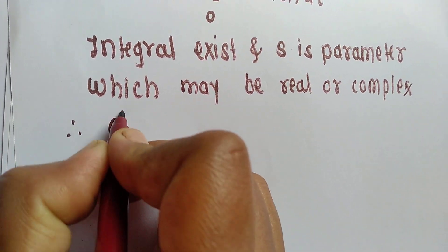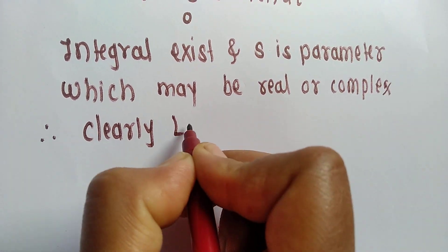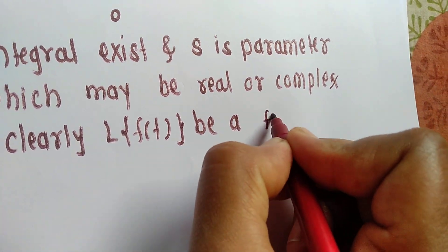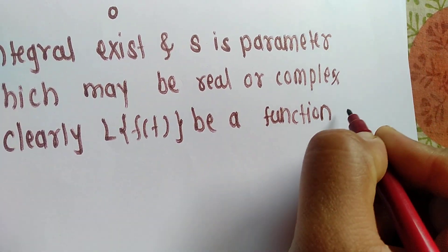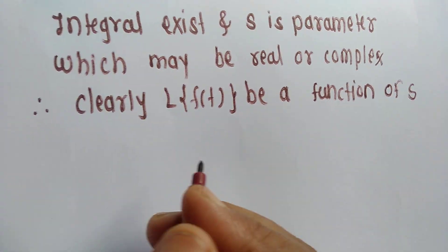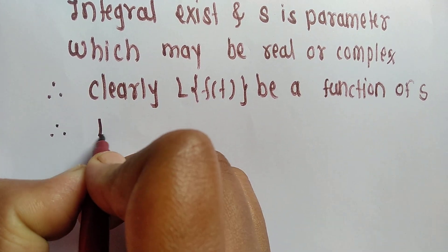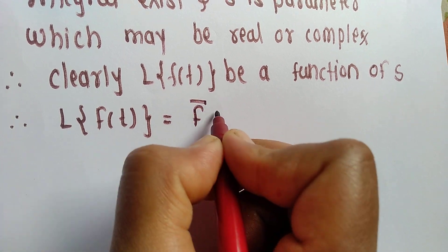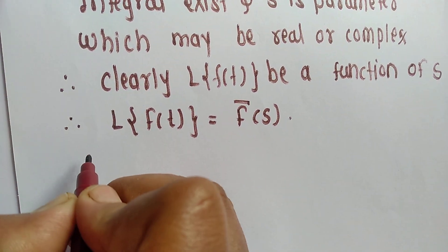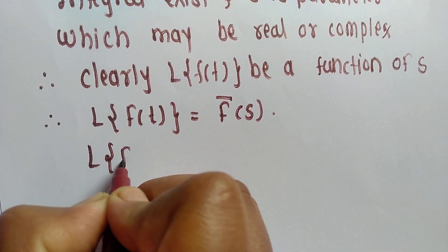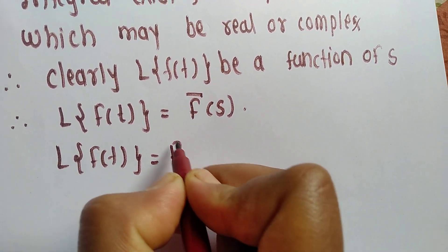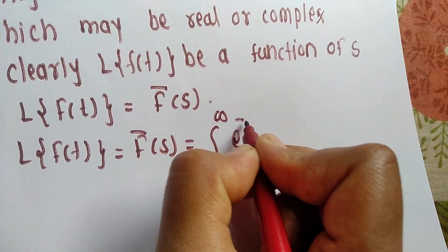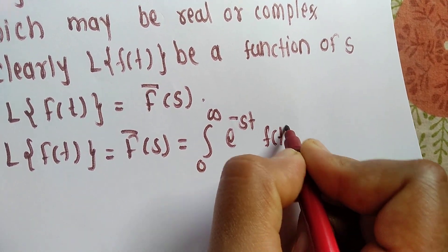Therefore, clearly, L of f of t is a function of s. Therefore we can write: L of f of t is equal to f-bar of s. So L of f of t equals f-bar of s, which is equal to integration 0 to infinity of e raised to minus st into f of t dt.